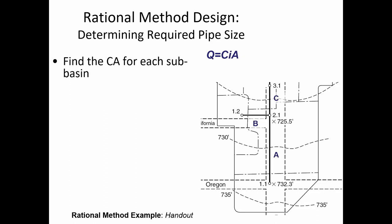This is where we left off last time. We have a simple network accepting stormwater at a couple of junctions. Junction 1.1 is where water flows over the surface — it's a grate connected to a catch basin that feeds water into pipe A. Junction 1.2 is also a grate. Pipe B connects to pipe A. And pipe C carries flow from three different locations: flow that got in at grate junction 2.1, flow received from pipe A, and flow received from pipe B.